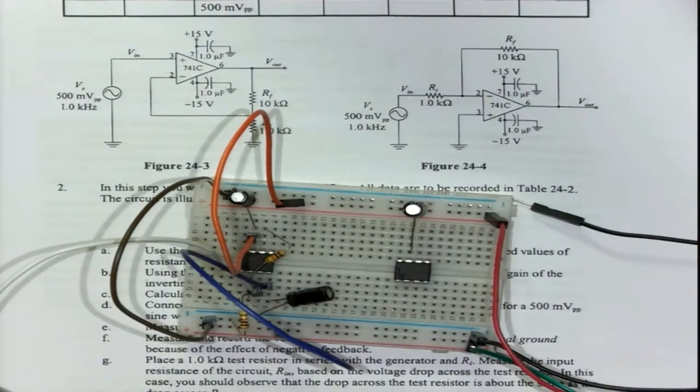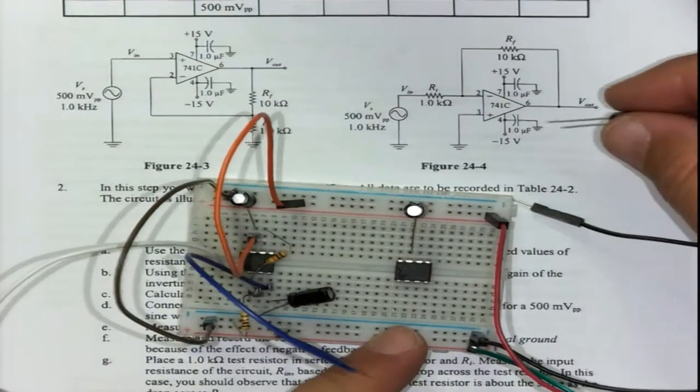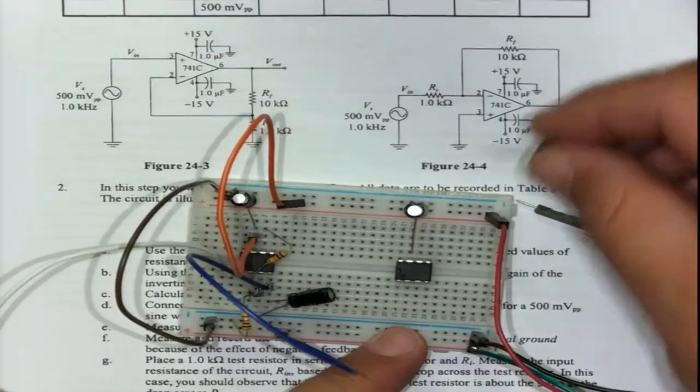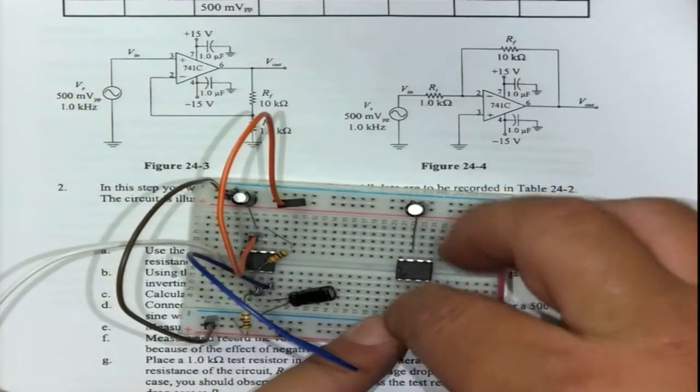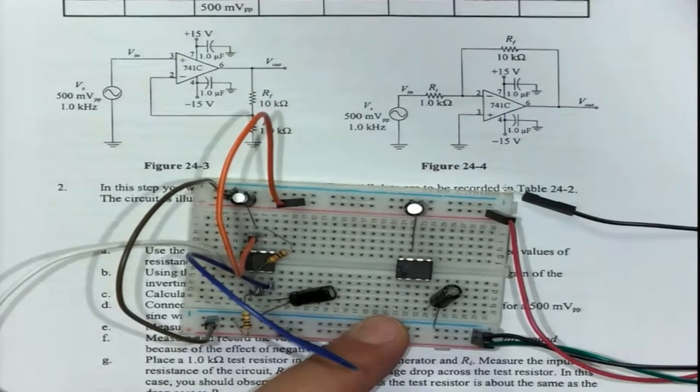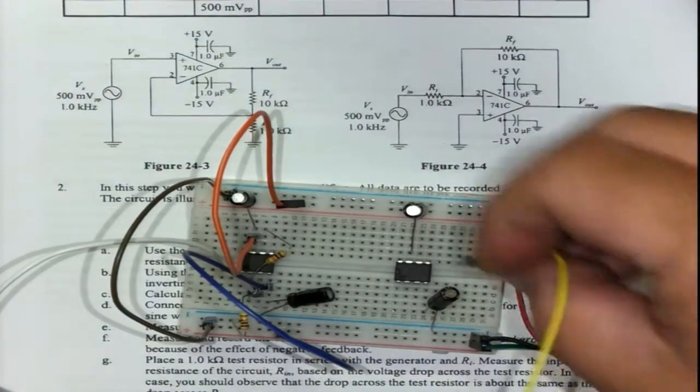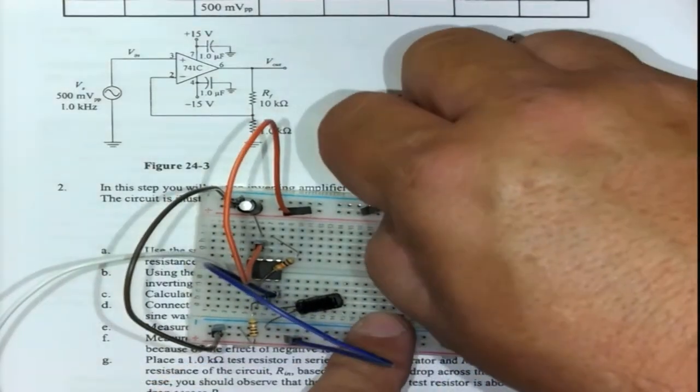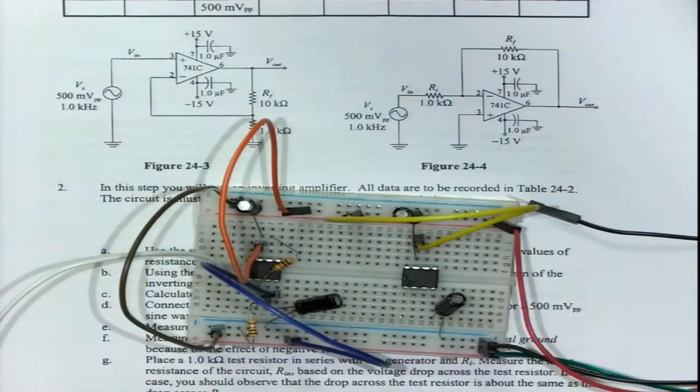The second capacitor, then the positive towards ground, and number 4 then becomes my minus Vcc. I can then do that. I can now connect that one like we did before, and connect this one here.